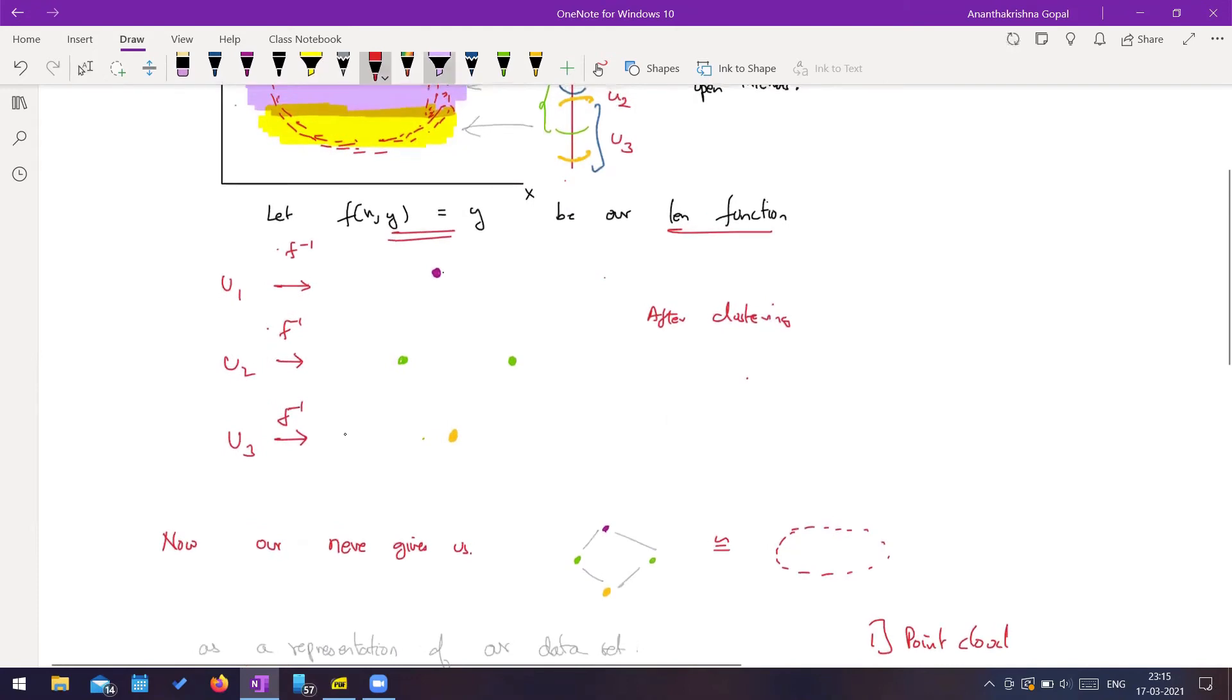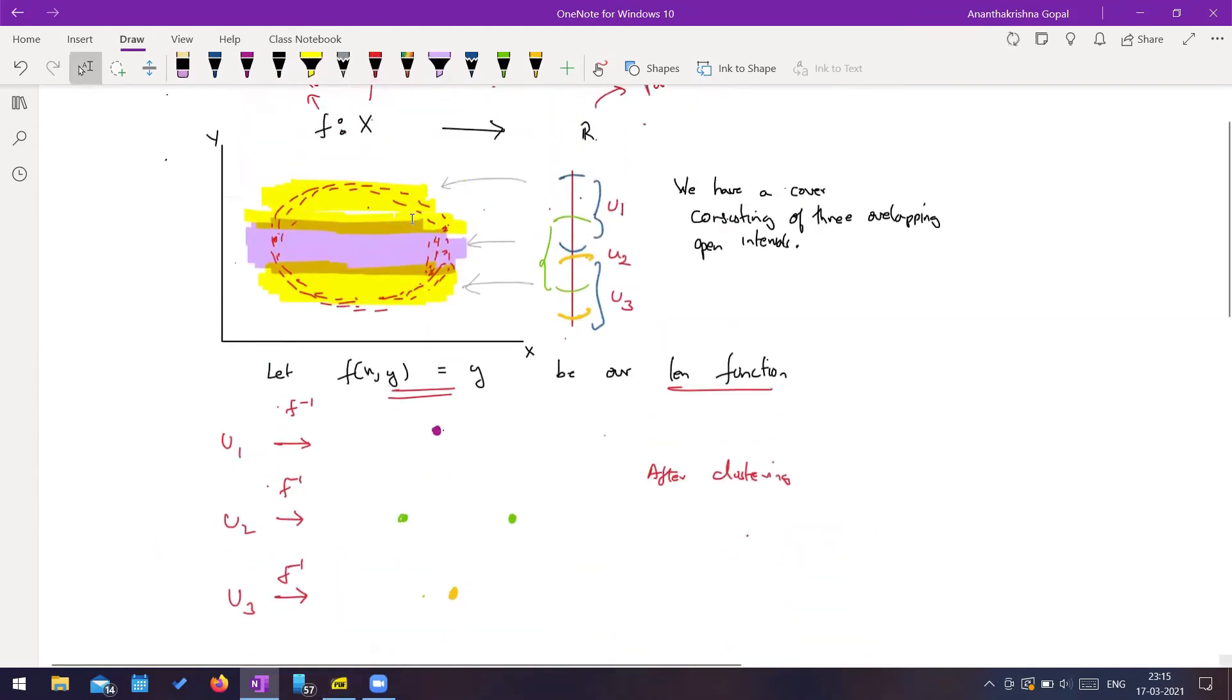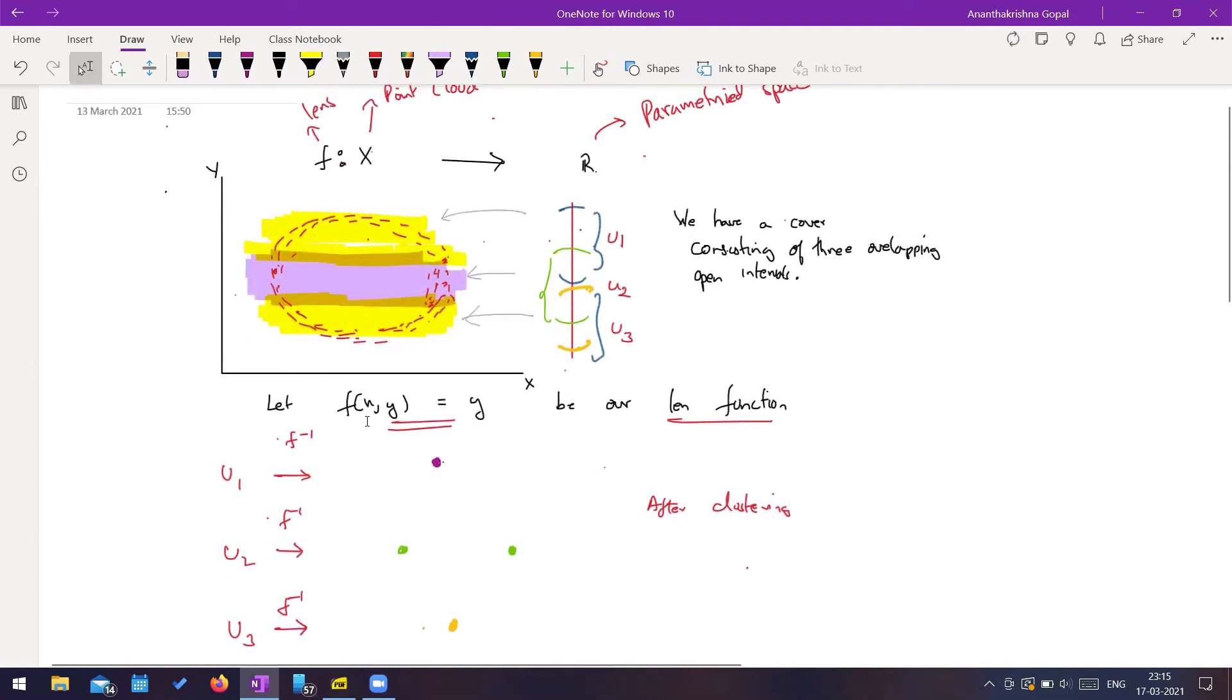So what we got is, we got one connected component in the inverse image of u1. You can see that. In the case of u2, for u1, we basically got something like this. In the case of u2, we got something like this. In the case of u3, again, we got something like this. So one connected component, two connected components, and again, one connected component. I have colored them accordingly. As you can see, purple, green, and yellow.